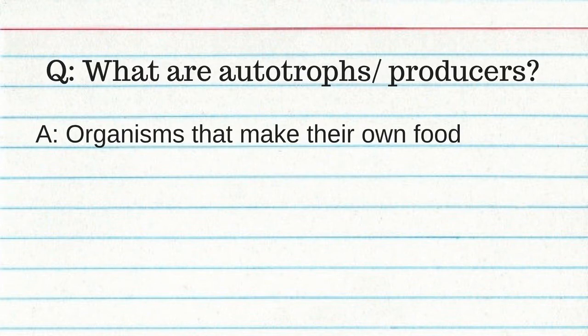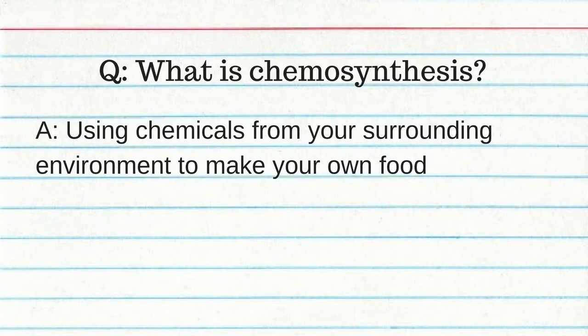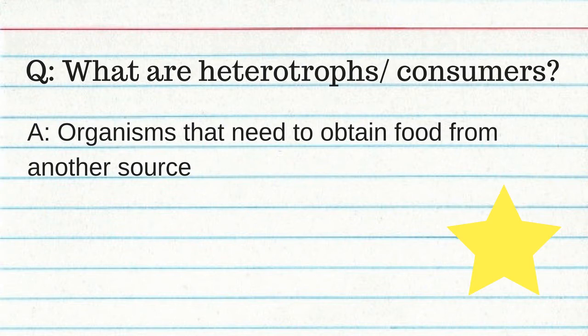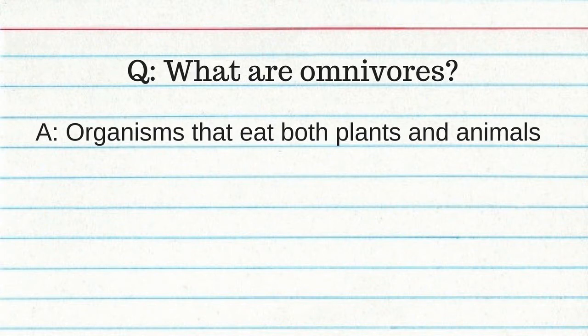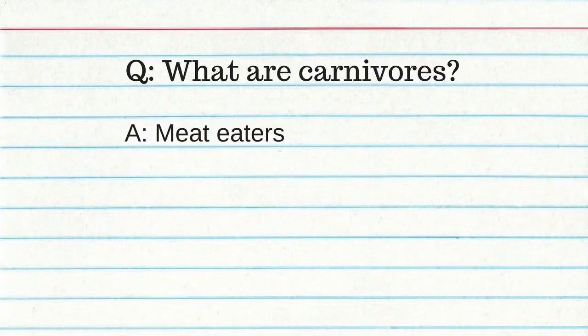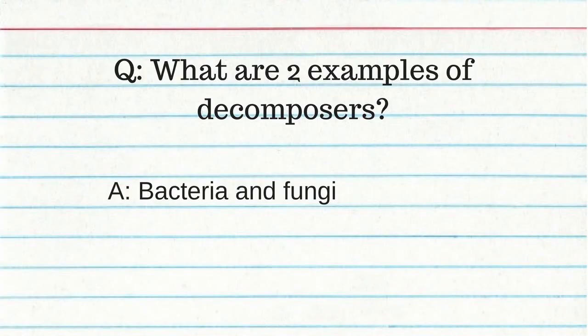What are autotrophs, also known as producers? Organisms that make their own food. Photosynthesis is using the sun to make your own food. Chemosynthesis is using chemicals from your surrounding environment to make your own food. Heterotrophs, also known as consumers, need to obtain food from another source. Herbivores are plant eaters, omnivores eat plants and meat, and carnivores are meat eaters. Decomposers, also called saprophytes, decay and recycle materials back into the soil. Two examples are bacteria and fungi.